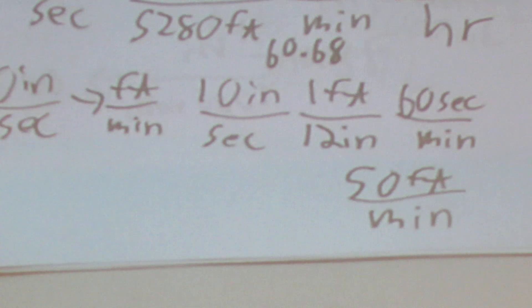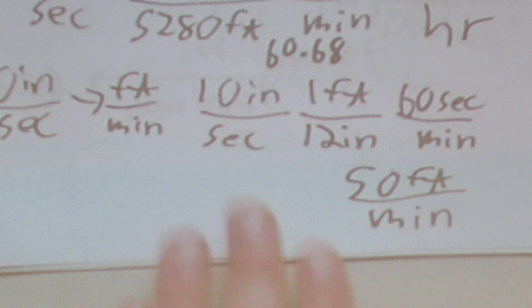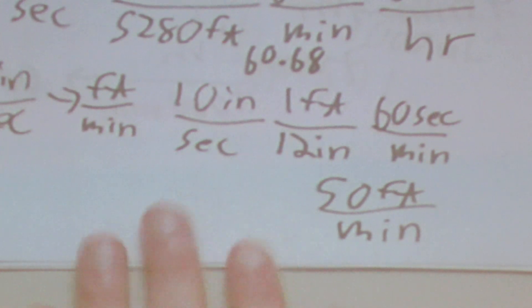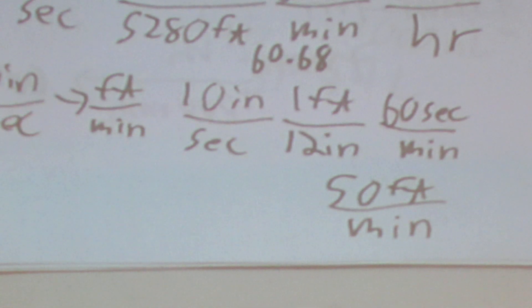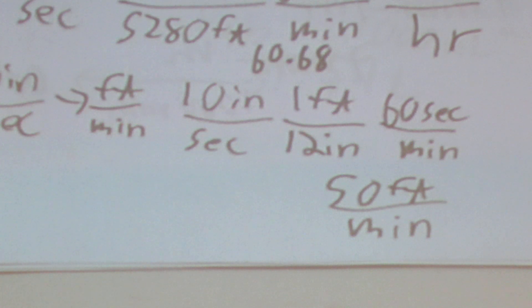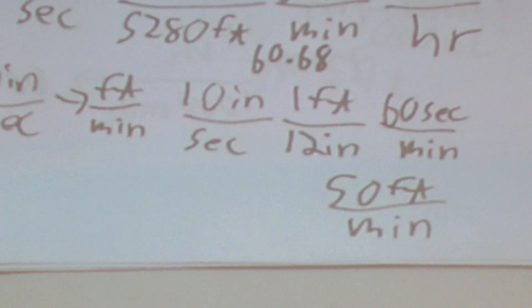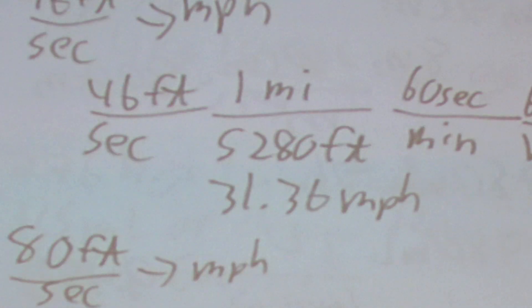Then we have one where we go from 10 inches per second to feet per minute. We say there are 10 inches per second, 1 foot in 12 inches, and 60 seconds per minute. When we do 10 divided by 12 times 60, we get 50 feet per minute.